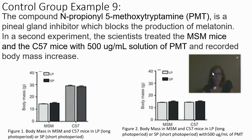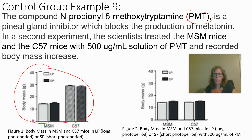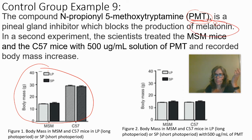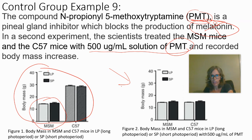In part two, the compound PMT — n-propionyl-5-methoxytryptamine — is a pineal gland inhibitor. The pineal gland produces melatonin, so PMT blocks melatonin production. In a second experiment, both MSM and C57 mice were treated with 500 micrograms per mL of PMT and body mass was recorded.